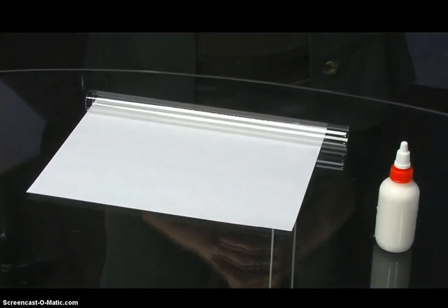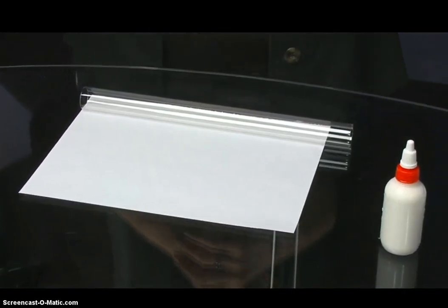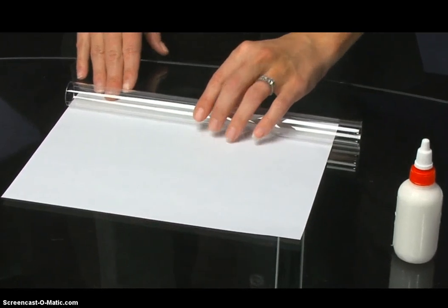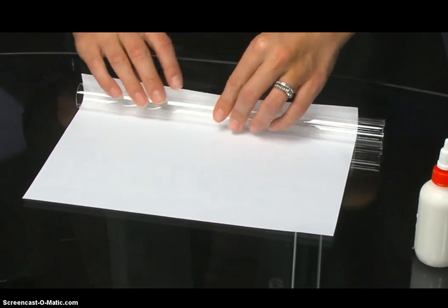To begin, place the plastic tube at one long edge of the typing paper. Roll the paper and tube together so that the paper winds tightly around the tube.